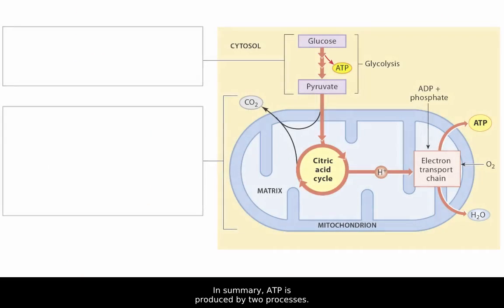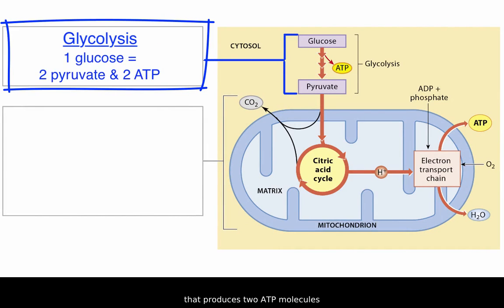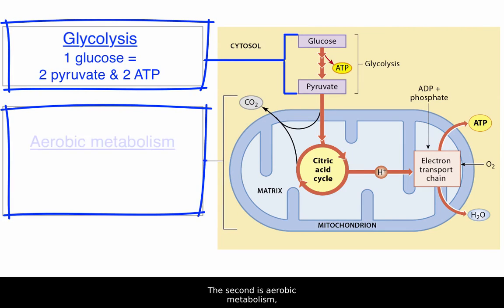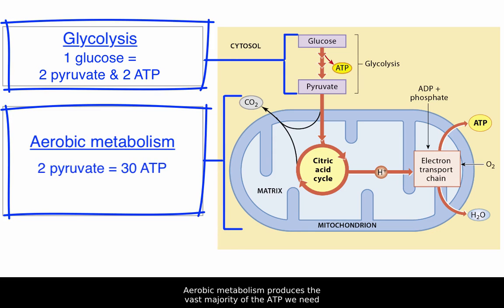In summary, ATP is produced by two processes. The first is glycolysis, an anaerobic pathway that produces two ATP molecules and two pyruvate molecules per glucose molecule. The second is aerobic metabolism, in which mitochondria absorb pyruvate, oxygen, and other substances to generate 30 ATP molecules. Aerobic metabolism produces the vast majority of the ATP we need at rest and during moderate activity.